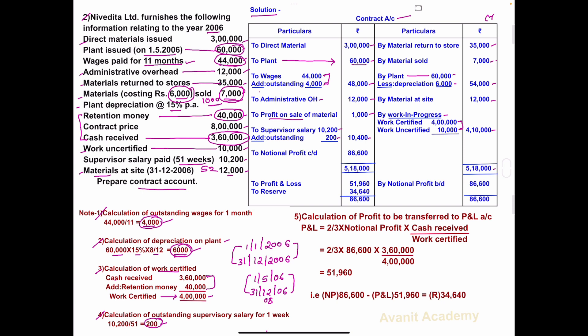The balance of the credit side is 5,18,000 — write same on the debit side. From 5,18,000 minus 3,00,000 minus 60,000 minus 48,000 minus 12,000 minus 1,000 minus 10,400, the balance is 86,600. This is called notional profit carried down, and it is brought down as notional profit brought down: 86,600.